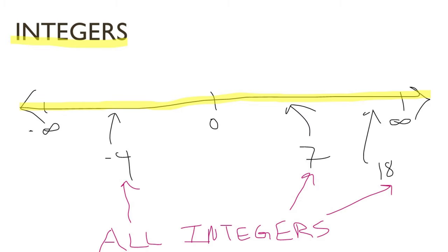First of all, you may be wondering what an integer is, so let's look at the number line. An integer is anything on a number line, including negative 4, 7, and 18. All integers.